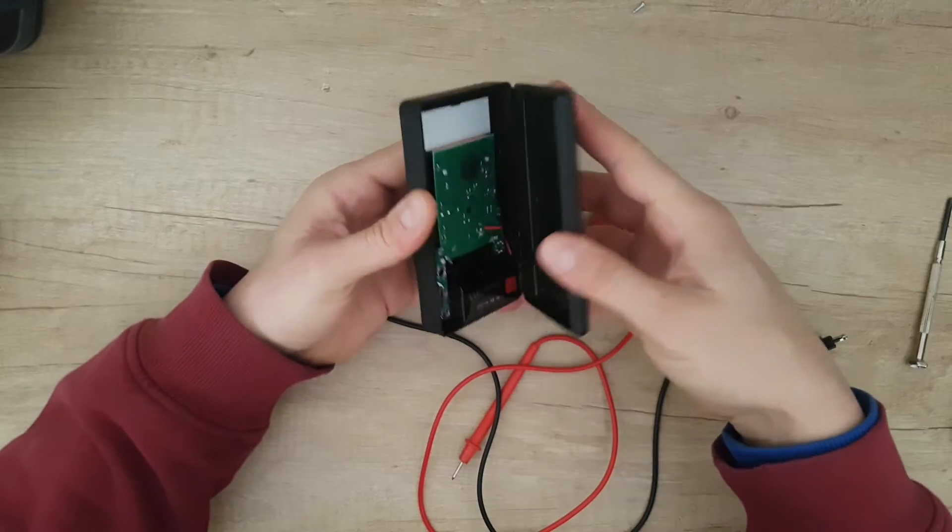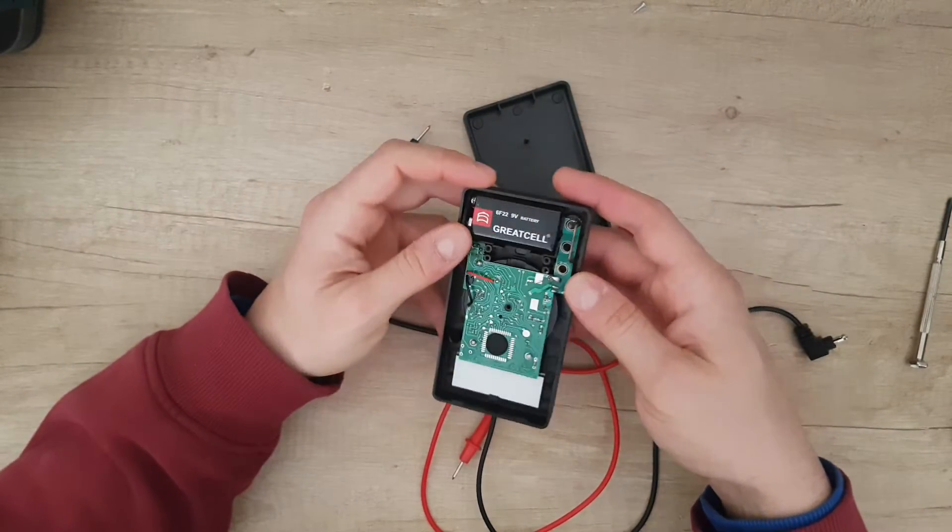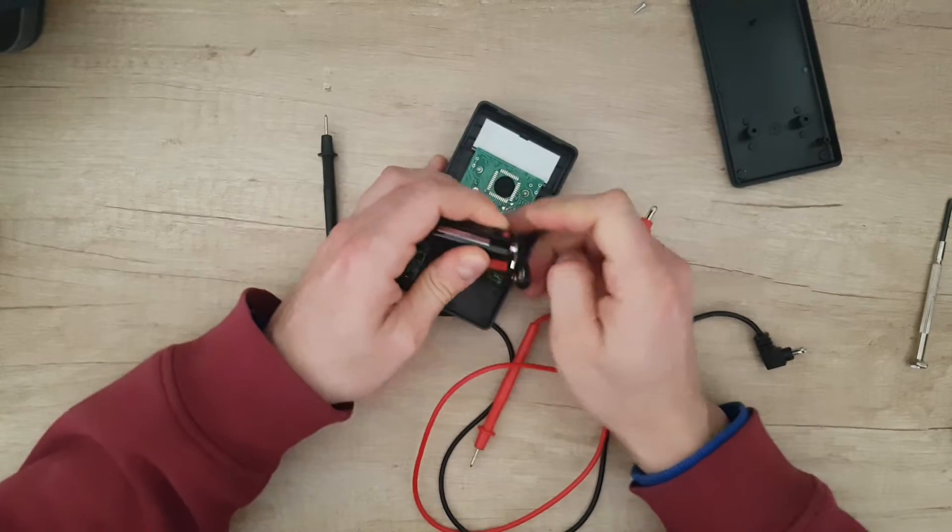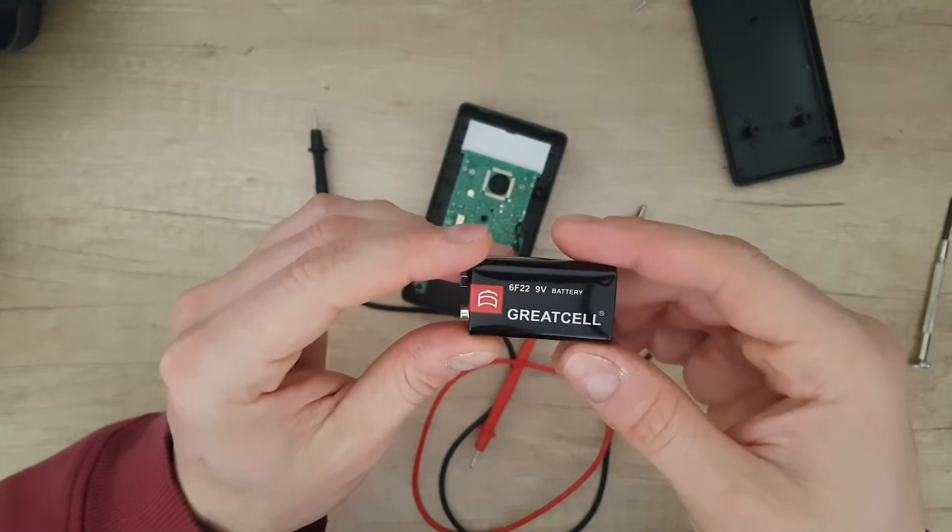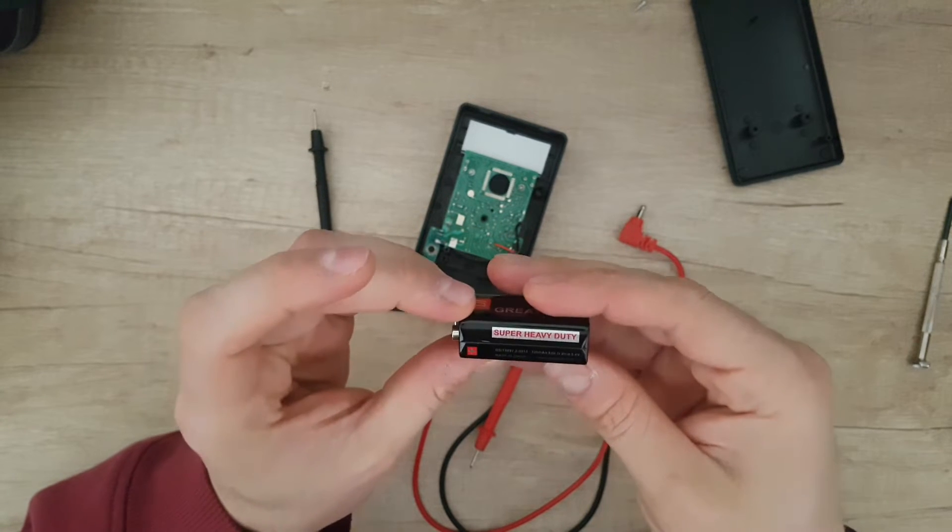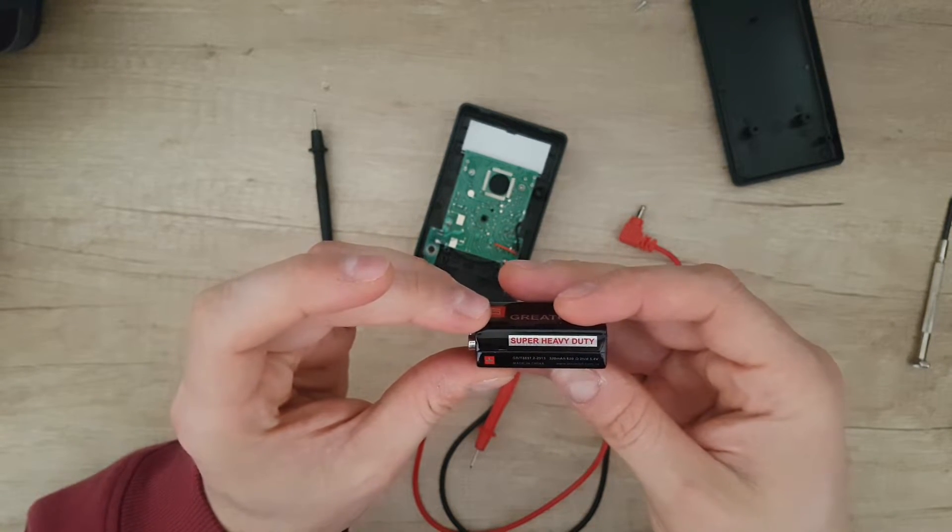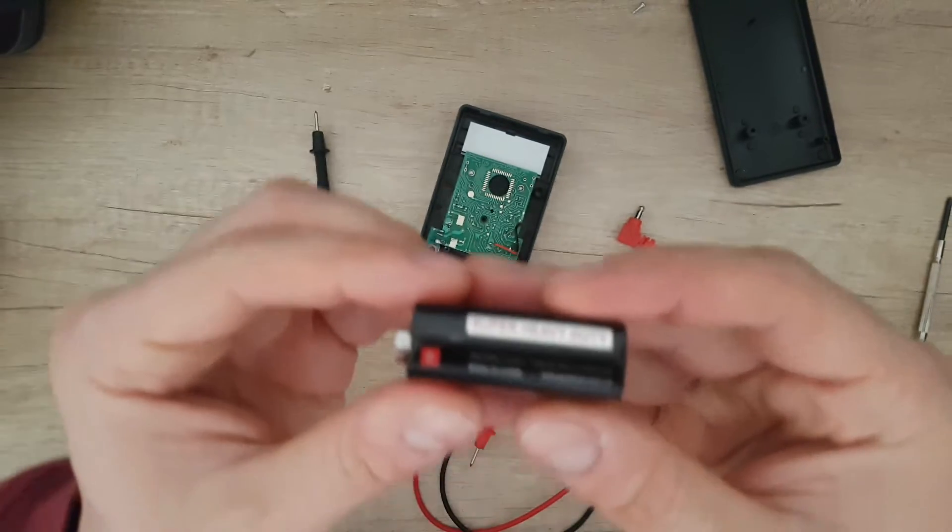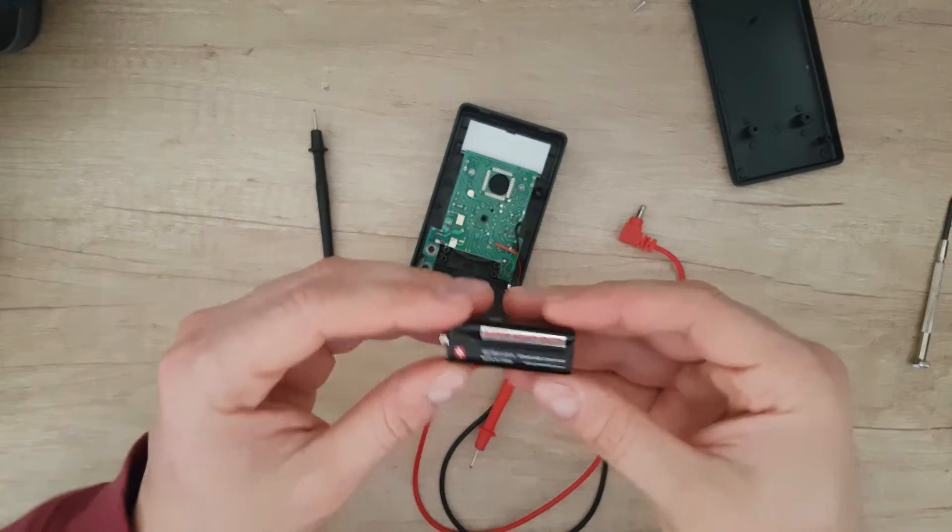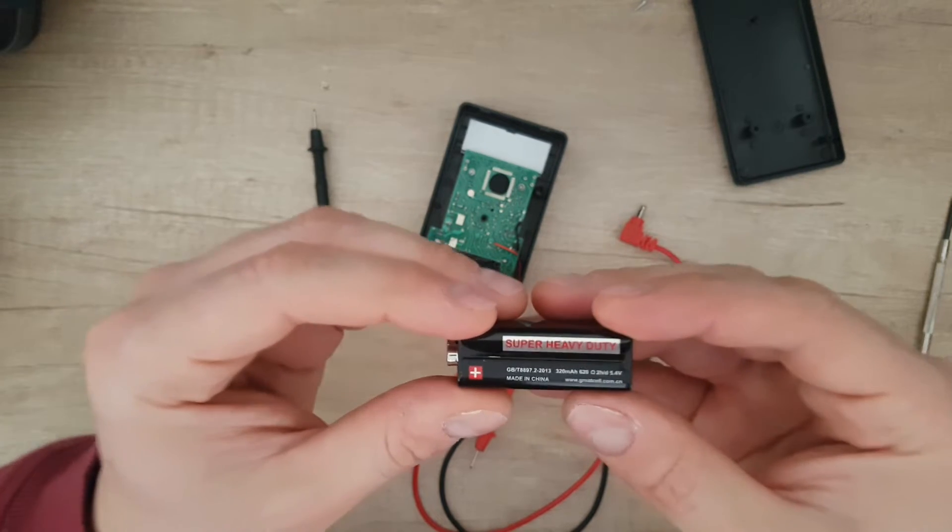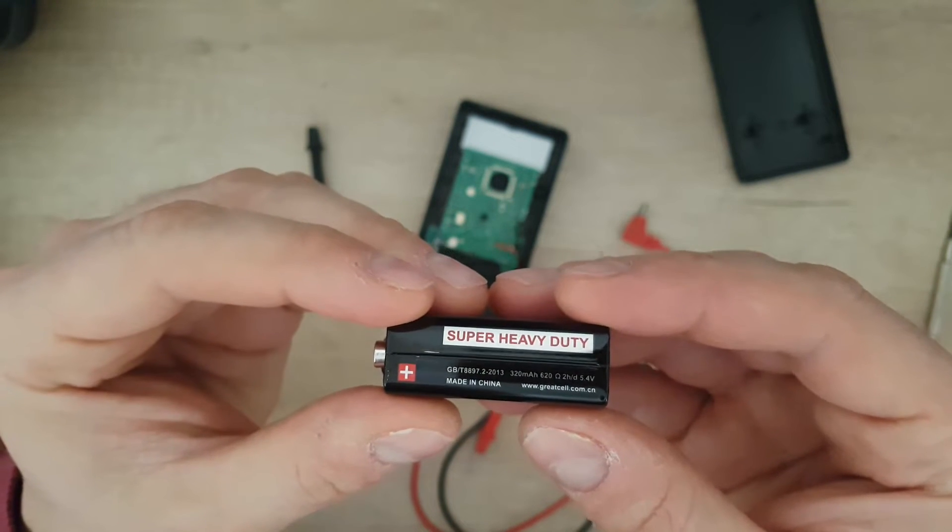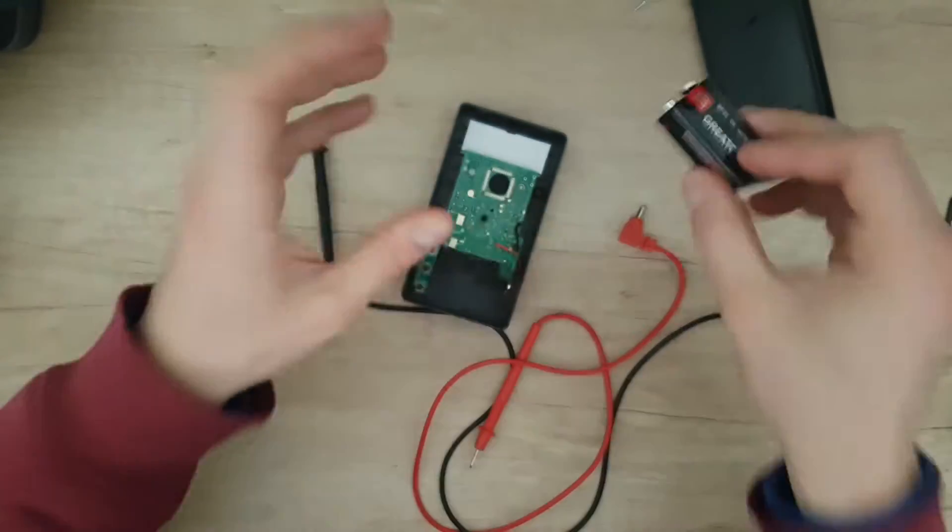Two screws. I'm just opening to see, yes it's working. It has a 9 volt battery inside. Let's take that out because I don't want to destroy anything, it's very fragile. Great Cell, super heavy duty. Made in China of course, on 2013. And it's still alive - 2013 and we have 2019, it's about five to six years. 9 volts, 320 milliamps. Great Cell.com.cn.